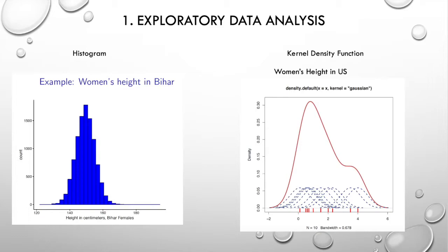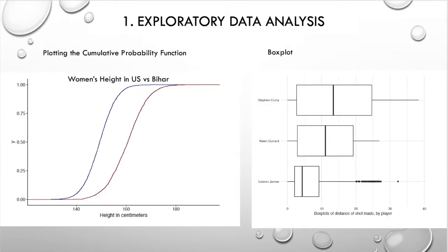It is a fundamental data smoothing problem where inferences about the population are made based on a finite data sample. Another thing new to me is plotting the cumulative probability function against each other when comparing sample data from two populations. This is different from PP plot or QQ plot.